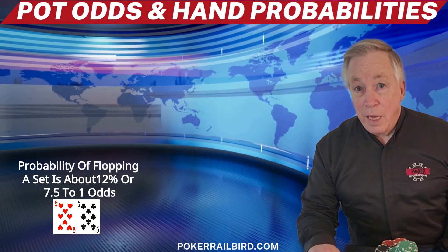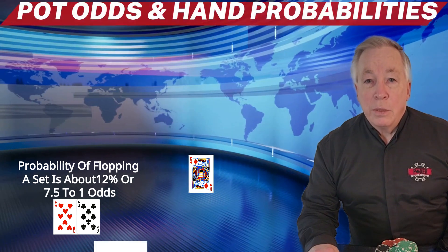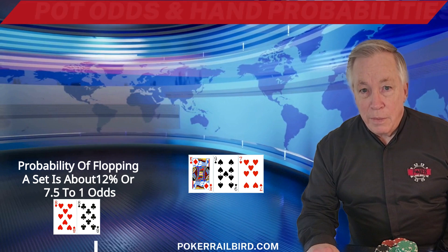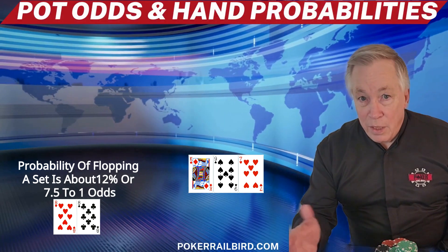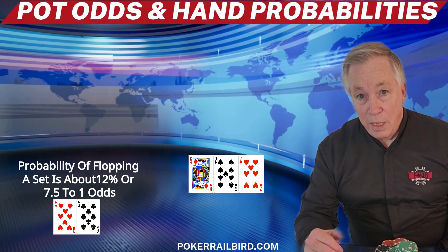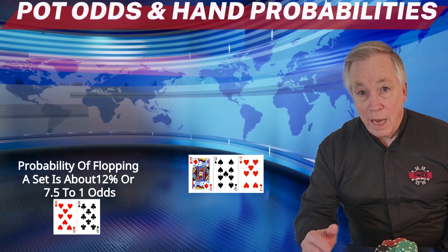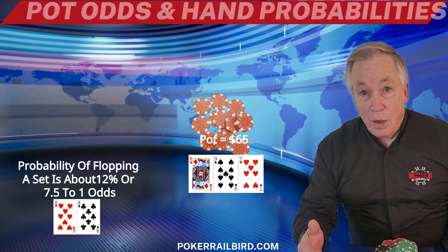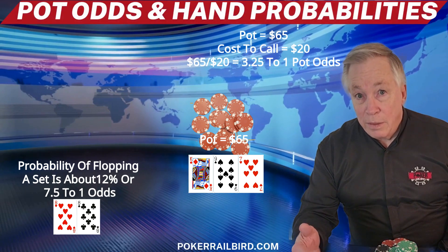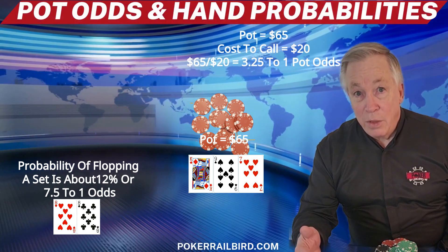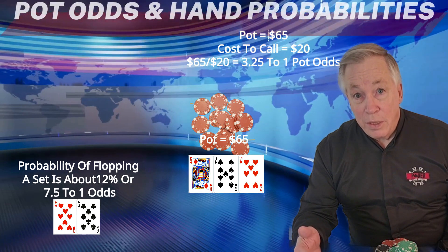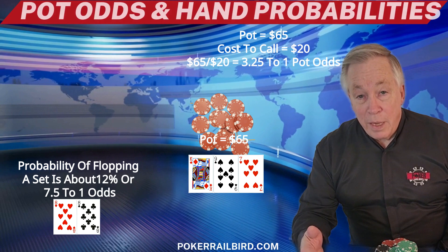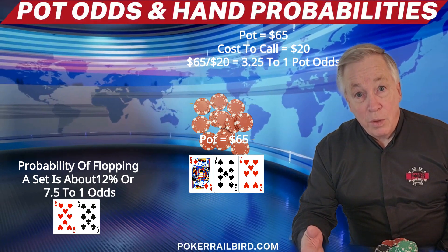The flop is the king of diamonds, the nine of spades, and the seven of hearts — two overcards to our 8s. The under-the-gun player leads out for $20. Everyone folds to the cutoff. She calls, and now the action is on you. The pot is $65, and it's $20 to call. What are your pot odds? Calculating pot odds in Texas hold'em involves comparing the current size of the pot to the cost of a contemplated call. This helps us determine if making the call is profitable over the long term.